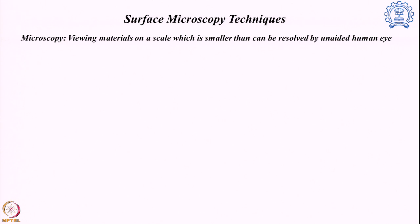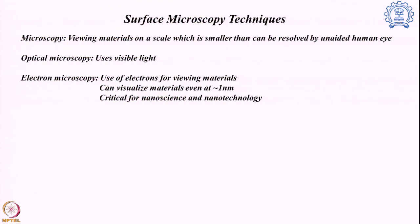Optical microscopy is quite common and it has really developed well over the years, by which we can not only examine biological systems but also material systems. With respect to time, we also developed some other microscopy techniques. For example, we are showing you the electron microscopy technique which actually uses electrons for viewing the material, whereas typical optical microscopy uses visible light.